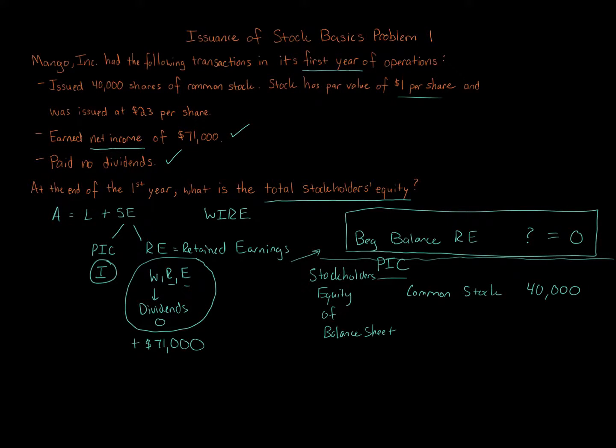The difference between $23 and $1 is $22. We multiply that $22 per share by 40,000 shares to get $880,000, which is our paid-in capital in excess of par. So our paid-in capital section of the balance sheet totals $920,000.